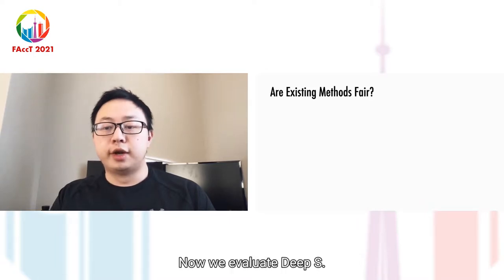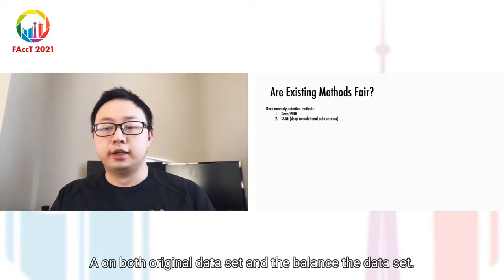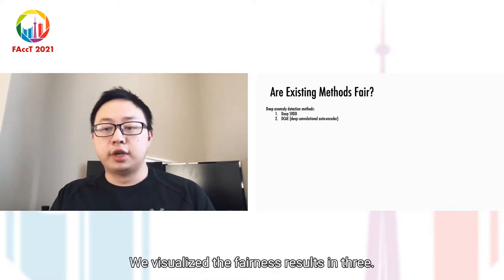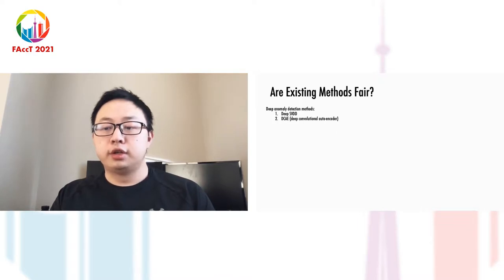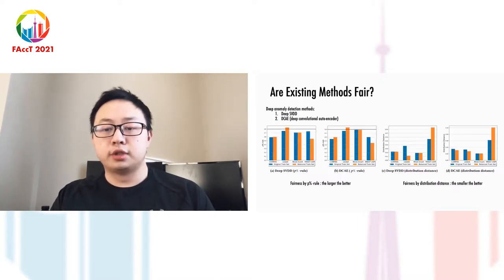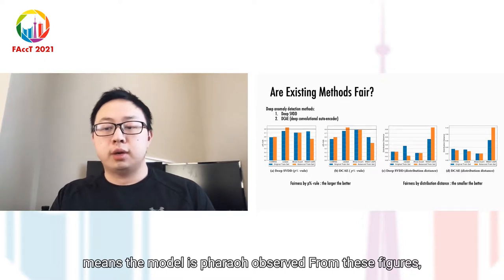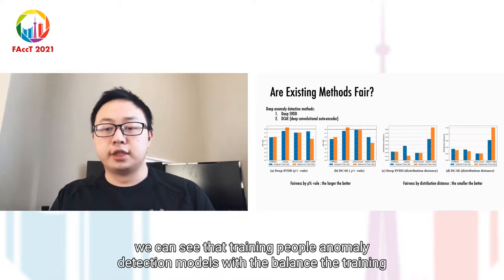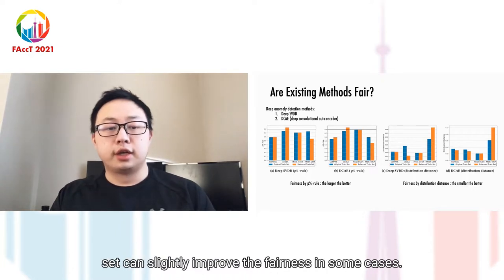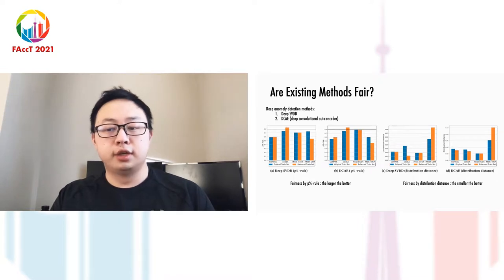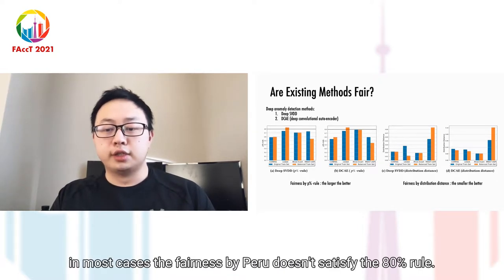Now we evaluate DeepSVDD and DCAE on both original datasets and balanced datasets. We visualize the fairness results in four bar plots. Note the larger fairness by P rule and the smaller distribution distance means the model is fairer. Observed from these figures, we can see that training deep anomaly detection models with a balanced training set can slightly improve fairness in some cases. However, in most cases, the fairness by P rule doesn't satisfy the 80% rule.